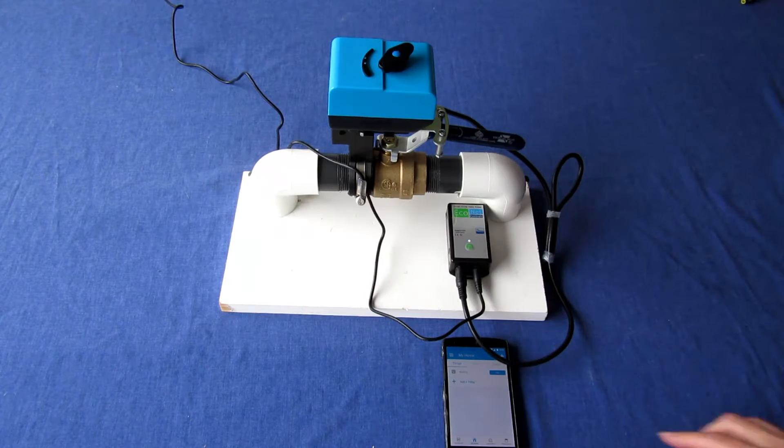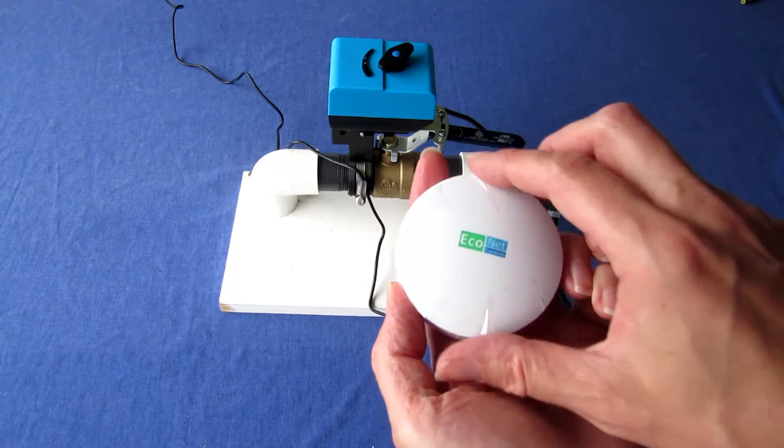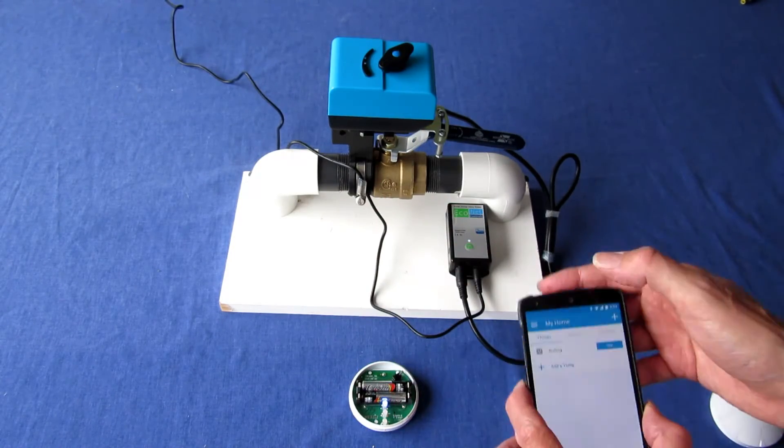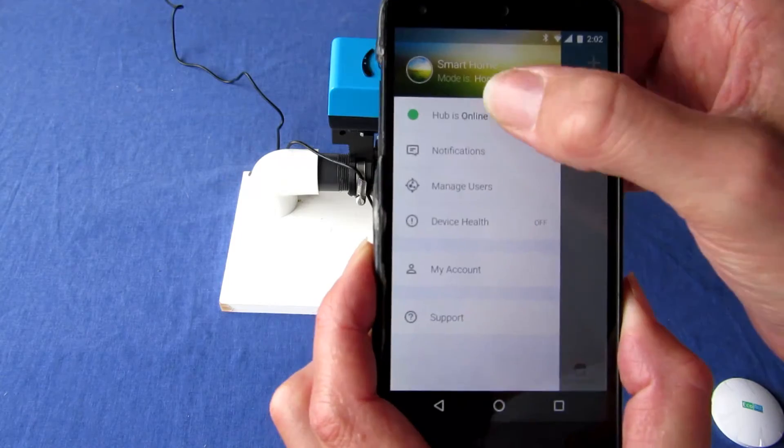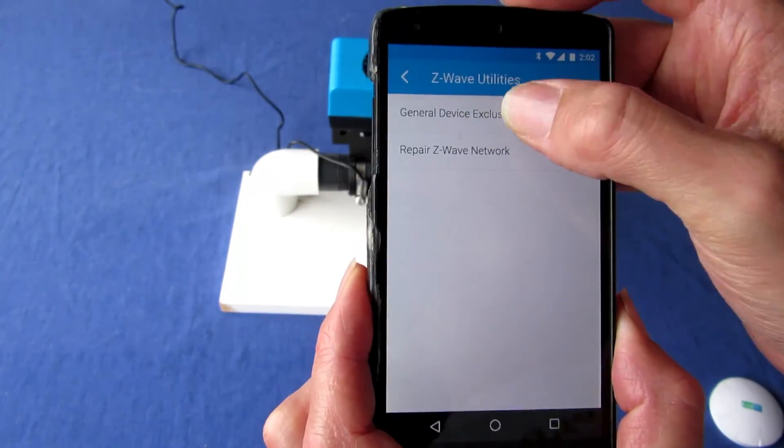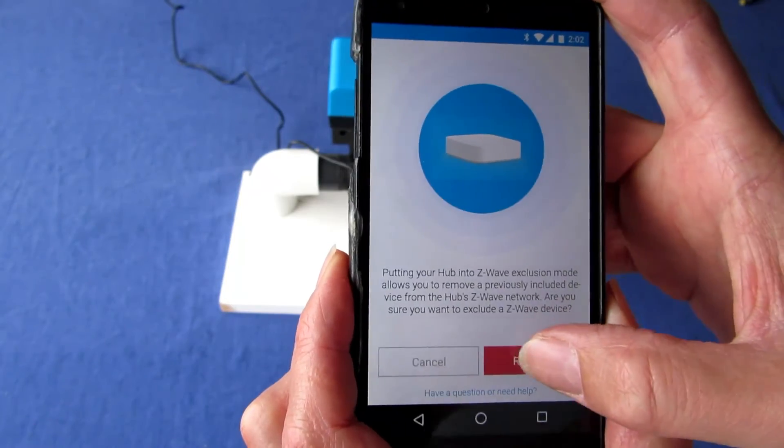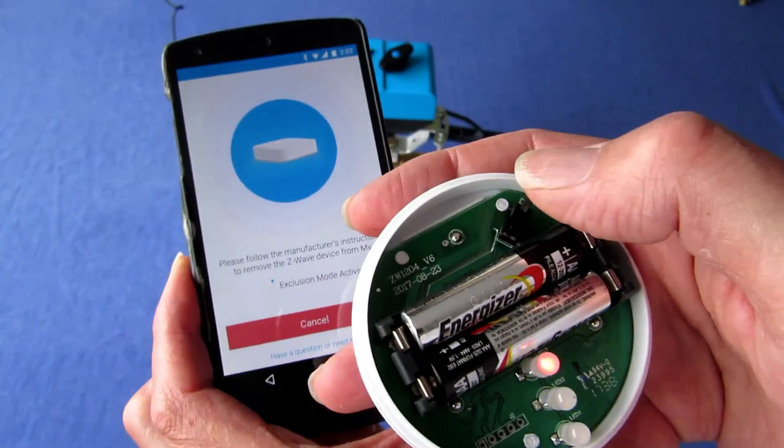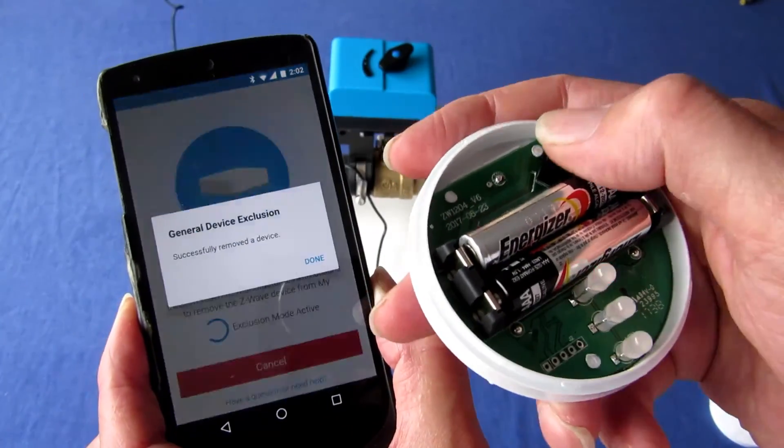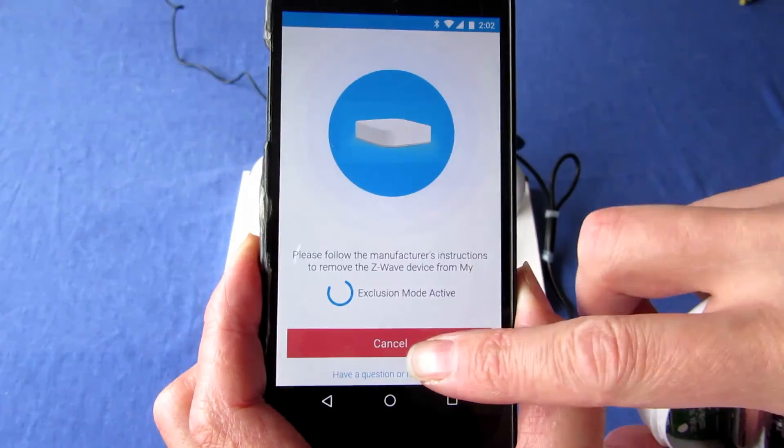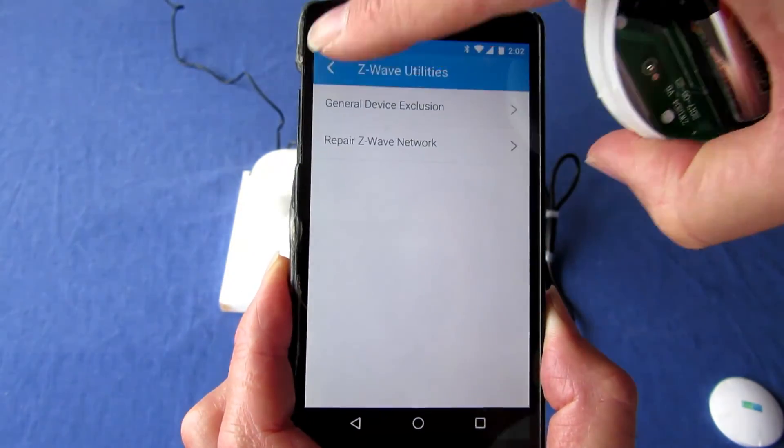To pair the leak sensor with the SmartThings Hub, follow the same steps as before. Select the menu icon in the top left corner of the app. Select where it says Hub is online. Select Z-Wave Utilities and then General Device Exclusion. Tap the Remove button to put the SmartThings Hub into exclusion mode, then press the button inside the leak sensor five or six times quickly. Tap Done, then tap Cancel and navigate back to the home screen.